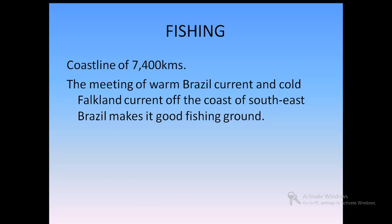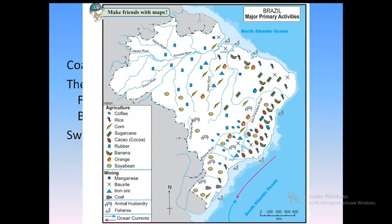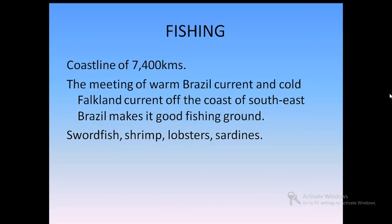Fishing is one of the traditional occupations in Brazil and fishermen have been using primitive techniques and equipment. But nowadays they also make use of large vessels. The fishes found in Brazil are swordfish, shrimp, lobsters and sardines. Inland fishing is not much developed in Brazil, though there are a large number of rivers. The reasons are the physiography, dense forests making regions inaccessible, and rivers that flow with great speed.